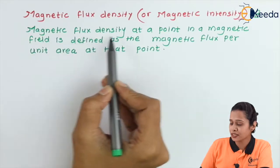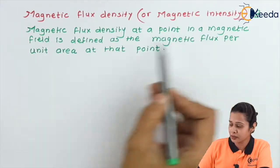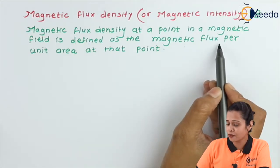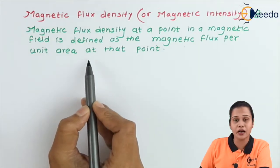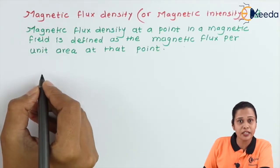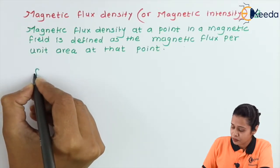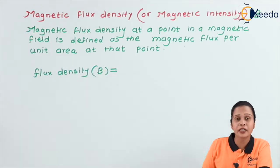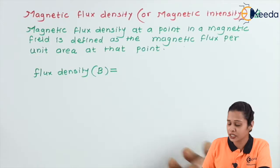Magnetic flux density at any point in a magnetic field is defined as magnetic flux per unit area. If we want to write down magnetic flux density, we will write magnetic flux per unit area.